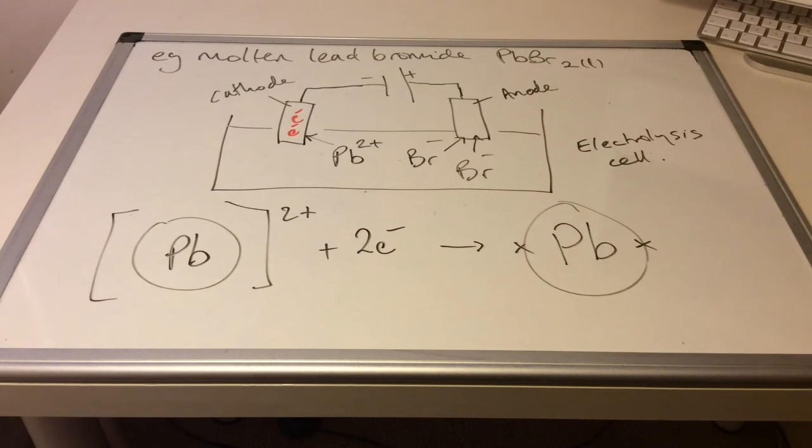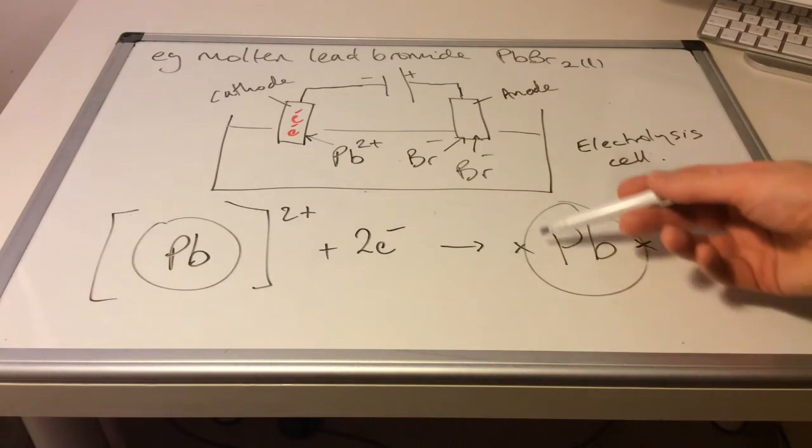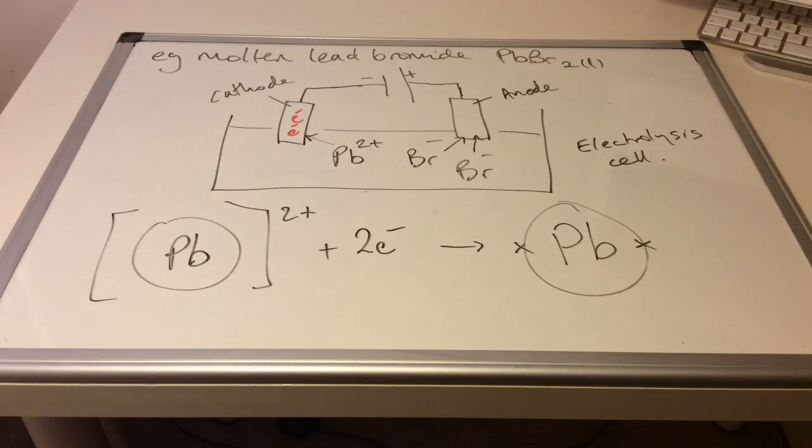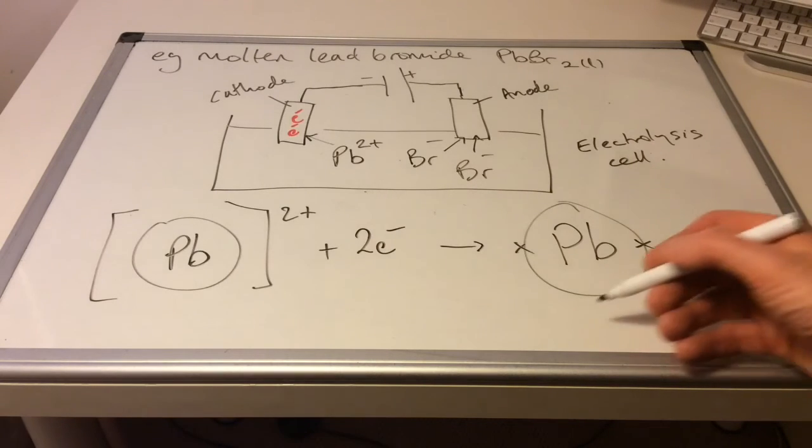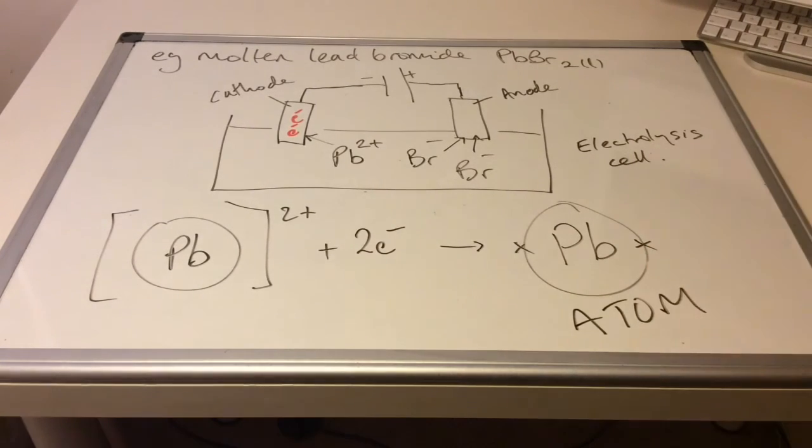So these lead two plus ions are going to pick up those two electrons. So because we're adding two electrons to a two plus ion, we generate a particle with no charge now, no overall charge. So what have we made? We've made a lead atom.